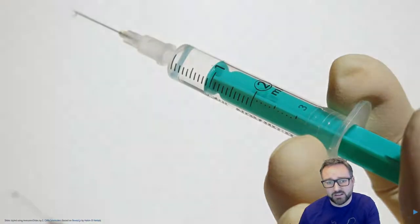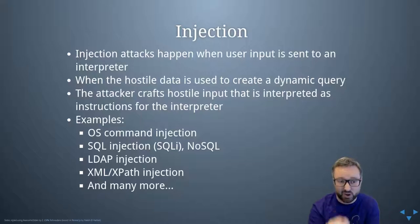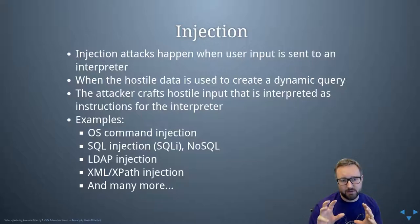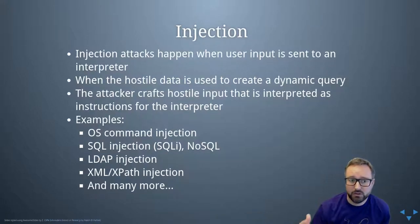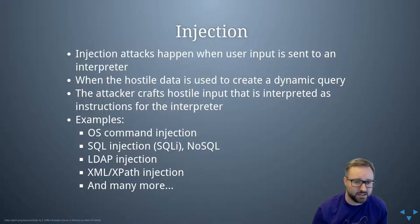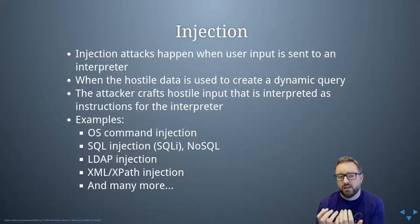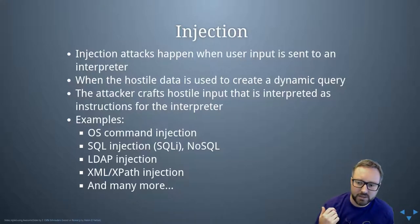Injection attacks are what happen when an attacker is able to send some code that gets interpreted as code and run somewhere — when that wasn't the intention of the programmer. When you're coding something and getting input from the user, if you then use that input to craft something that gets sent to an interpreter of some kind — like a SQL interpreter, a database query, a PowerShell command, or a bash command in Linux — you're creating a dynamic query or command. If a potential attacker is supplying part of that command, things can go wrong.